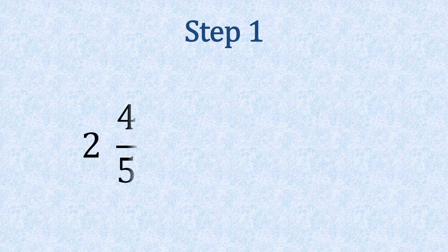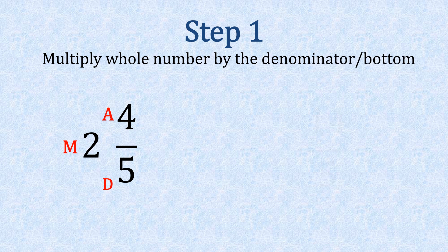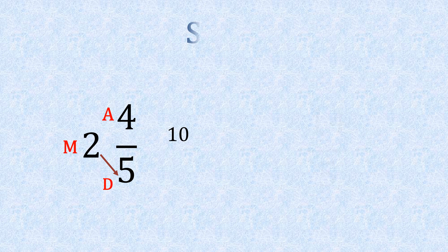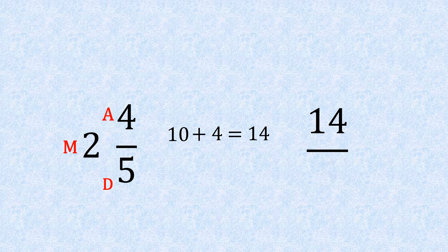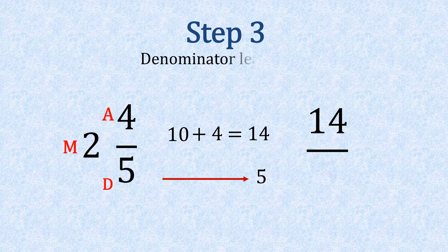Let's try another one. Remember, step one is our multiply: two times five, giving us ten. Pop that on the top line. Then our A for add — we're going to add the numerator, which is four. Ten plus four gives us 14. And then our third step, D for denominator, leave it down — bring that across. The answer is 14 fifths. So we now have an improper fraction.